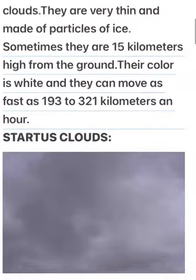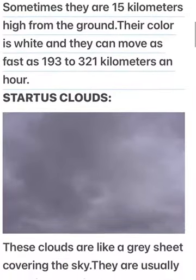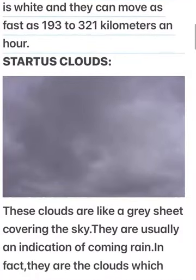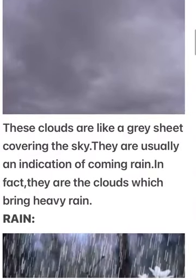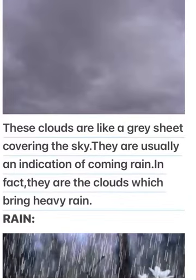Stratus clouds. These clouds are like a gray sheet covering the sky. They are usually an indication of coming rain. In fact, they are the clouds which bring heavy rain.